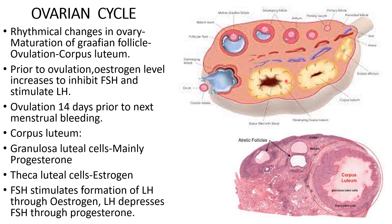During each ovarian cycle, 5 to 12 follicles will start maturing, but only one follicle will completely mature and reach the Graafian follicle stage; the rest will degenerate and undergo atretic changes to form interstitial cells. The primordial follicle has a primary oocyte surrounded by flat squamous epithelium. Later the flat epithelium becomes cuboidal or columnar to form the primary follicle.